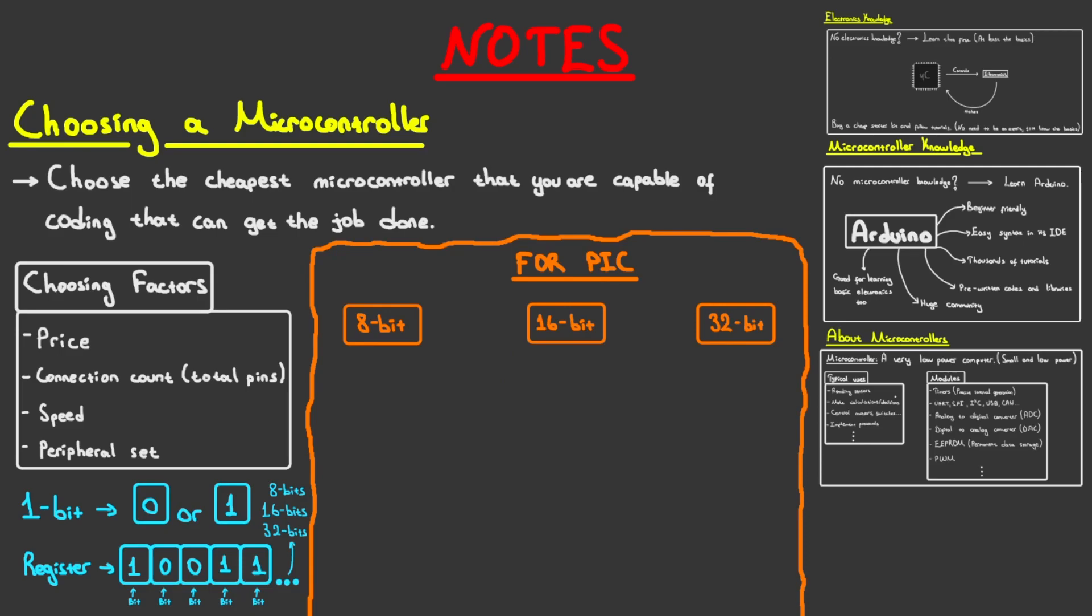So in general, 32-bit microcontrollers are more powerful than 16-bit, while 16-bit are more powerful than 8-bit, which also, of course, affects their price, respectively. So don't just go out buying only 32-bit microcontrollers. Especially if you are just learning, just stick to 8-bit microcontrollers for now.